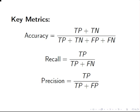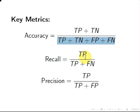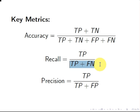The key metrics are as follows. Accuracy is the total number of correct classifications divided by the total number of cases — very straightforward, though the formula makes it look more complicated than it is. Recall is the total number of true positives divided by the total number of actual positives. And precision is the total number of true positives divided by the total number of predicted positives, which is true positives plus false positives.